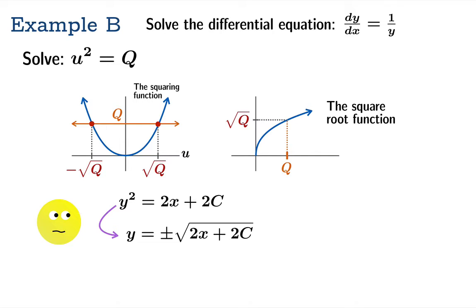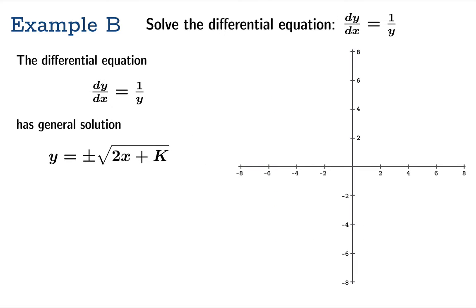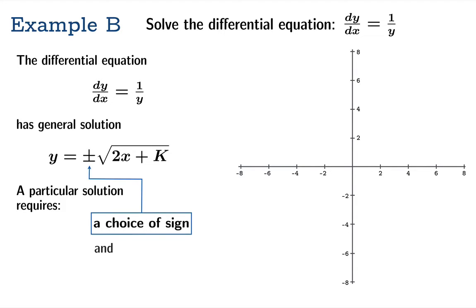This is a theme which shows up in more complicated cases down the road, including a couple examples in this presentation. Back to our problem: we have this constant 2c. We could give that a new name to simplify things. A particular solution requires a choice of sign out front as well as a choice of k.